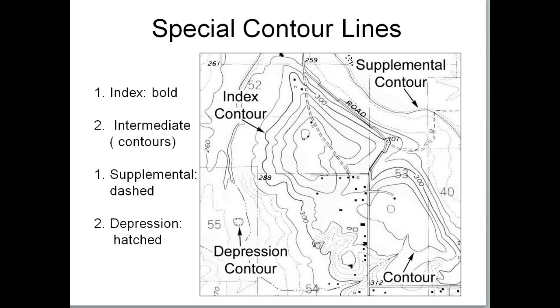Supplemental contour lines appear a lot when there's very little elevation change. In maps of the Willamette Valley, you often see two types of supplemental lines — one could be a 10-foot supplemental line and the other a 5-foot supplemental line.